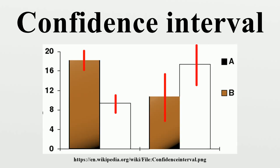The desired level of confidence is set by the researcher. If a corresponding hypothesis test is performed, the confidence level is the complement of the respective level of significance — i.e., a 95% confidence interval reflects a significance level of 0.05.